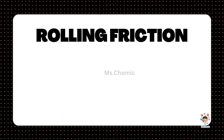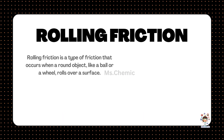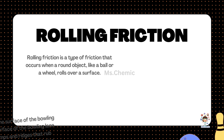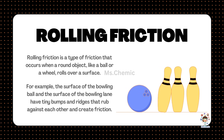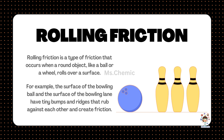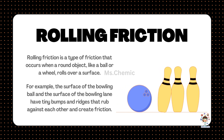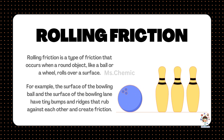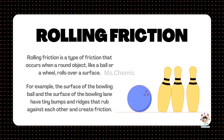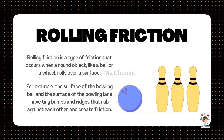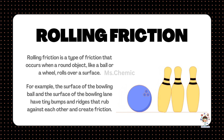Sliding friction is the force that resists motion as the block slides across a surface. Rolling friction is a type of friction that occurs when a round object, like a ball or a wheel, rolls over a surface. For example, the surface of the bowling ball and the surface of the bowling lane have tiny bumps and ridges that rub against each other and create friction.